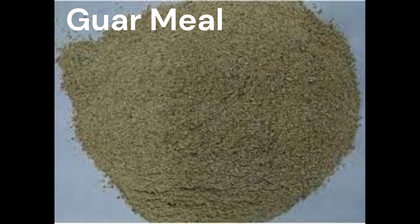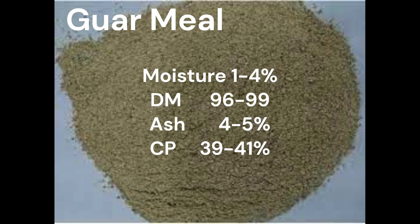Guar meal is also one of the animal feed ingredients. It contains moisture 1-4%, dry matter 96-99%, ash 4-5%, and crude protein 39-41%.